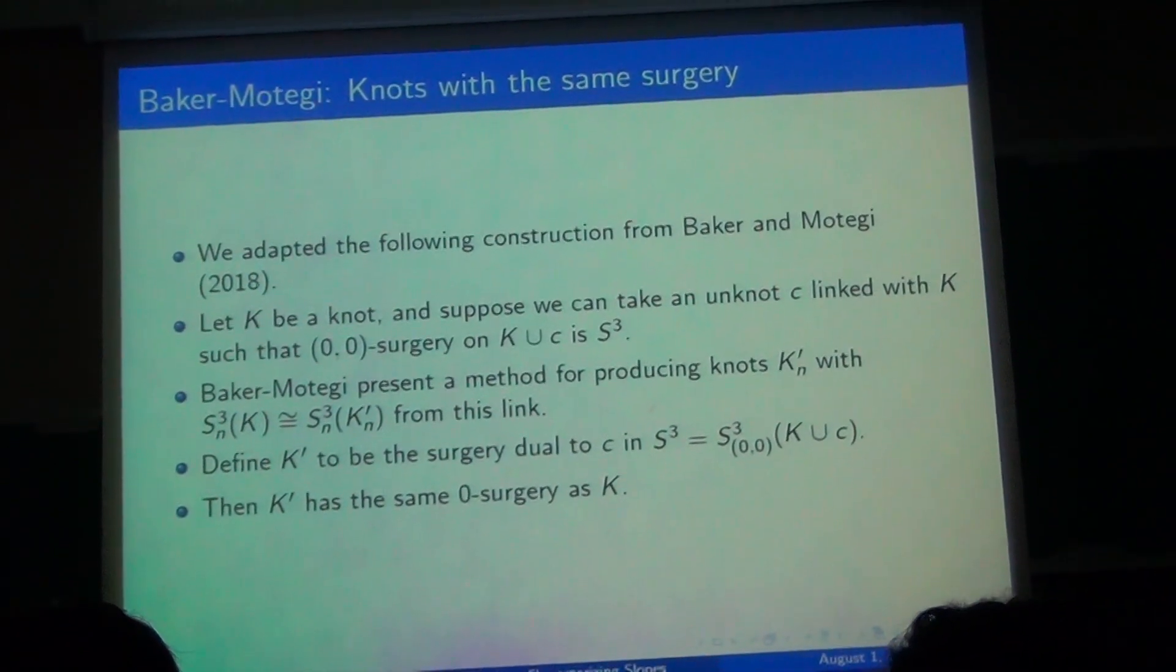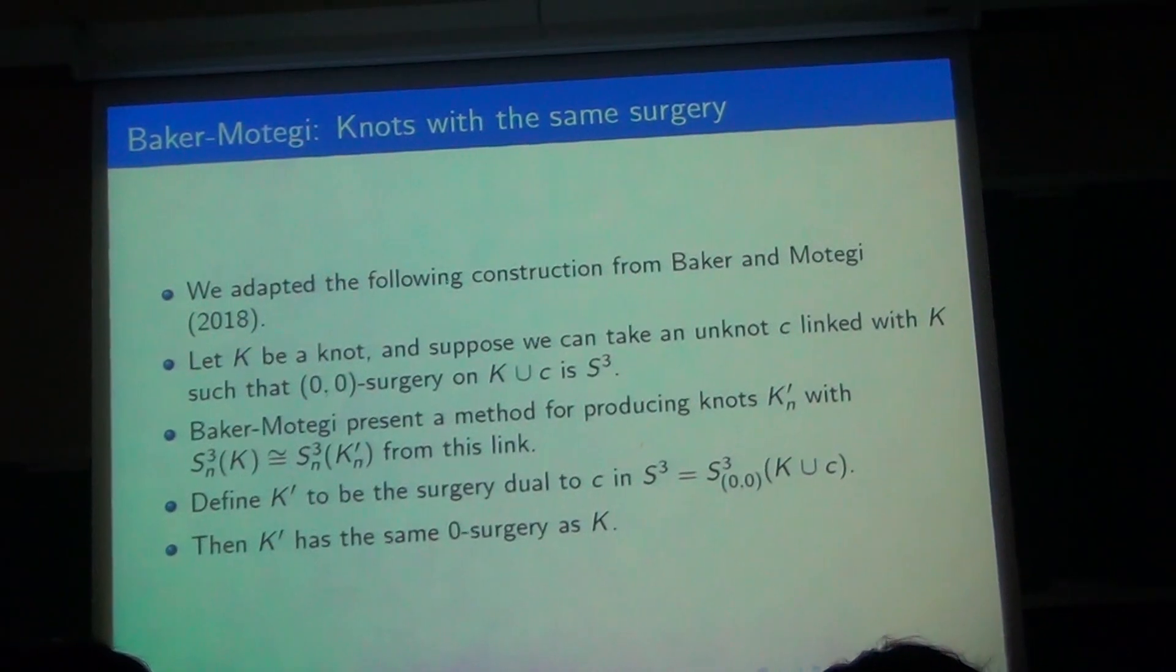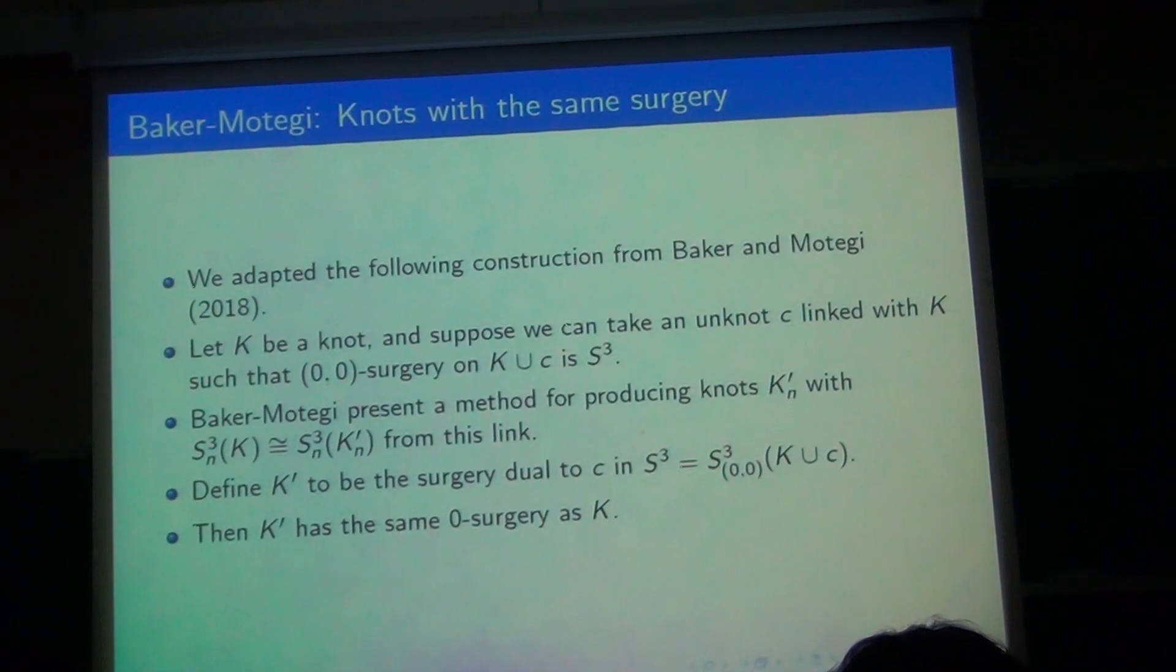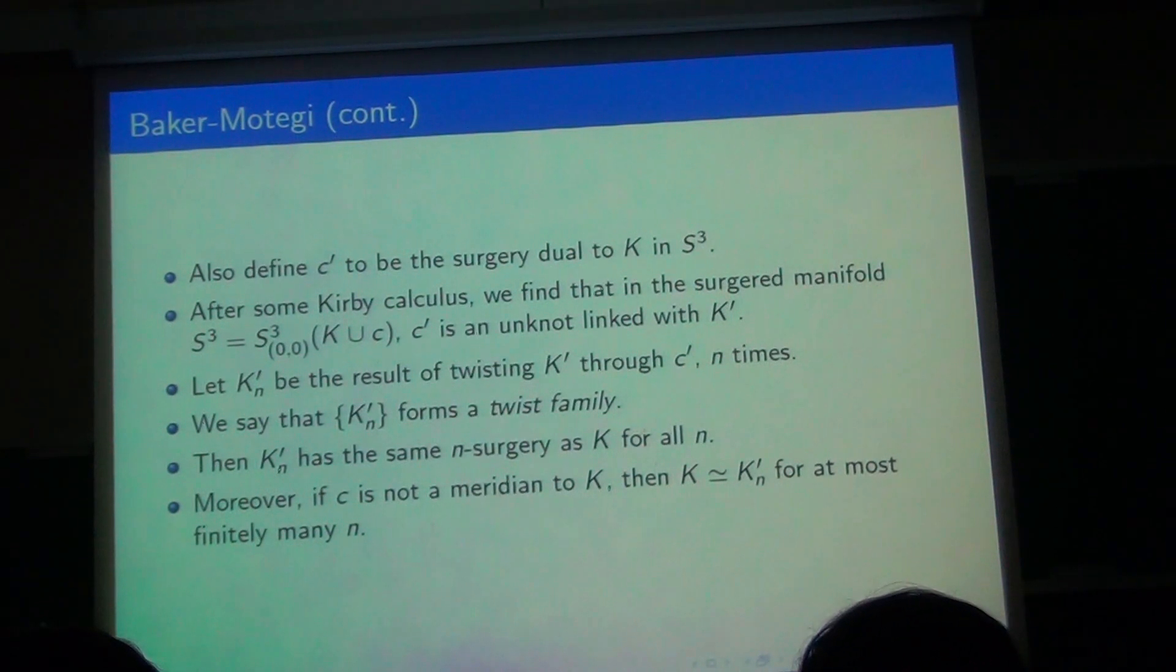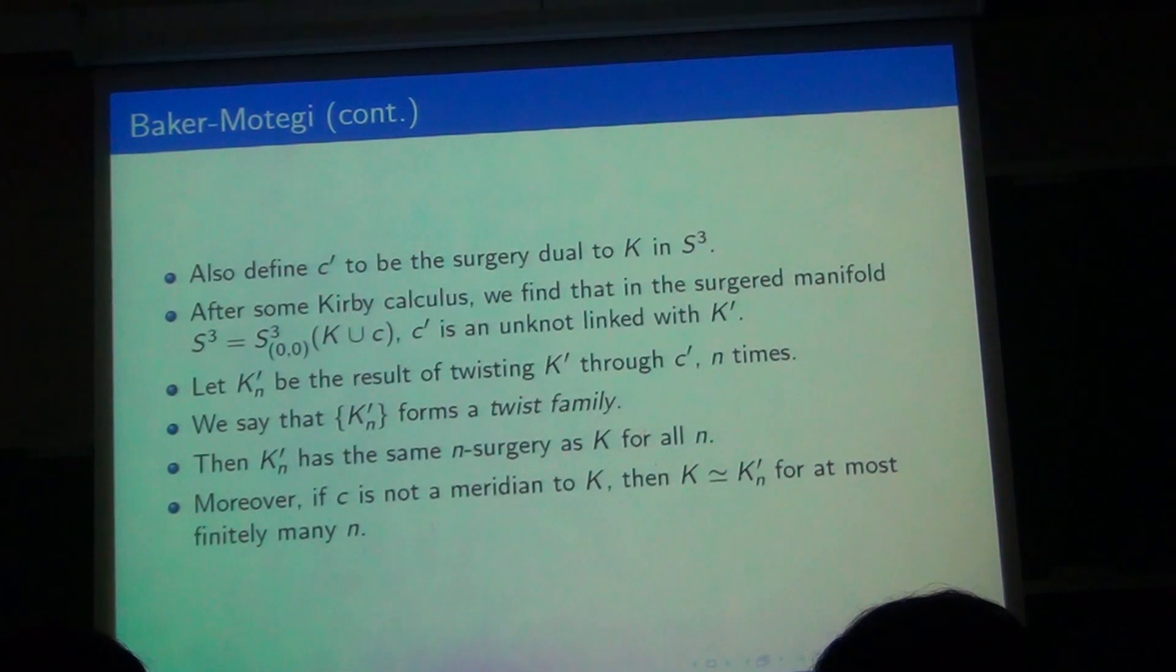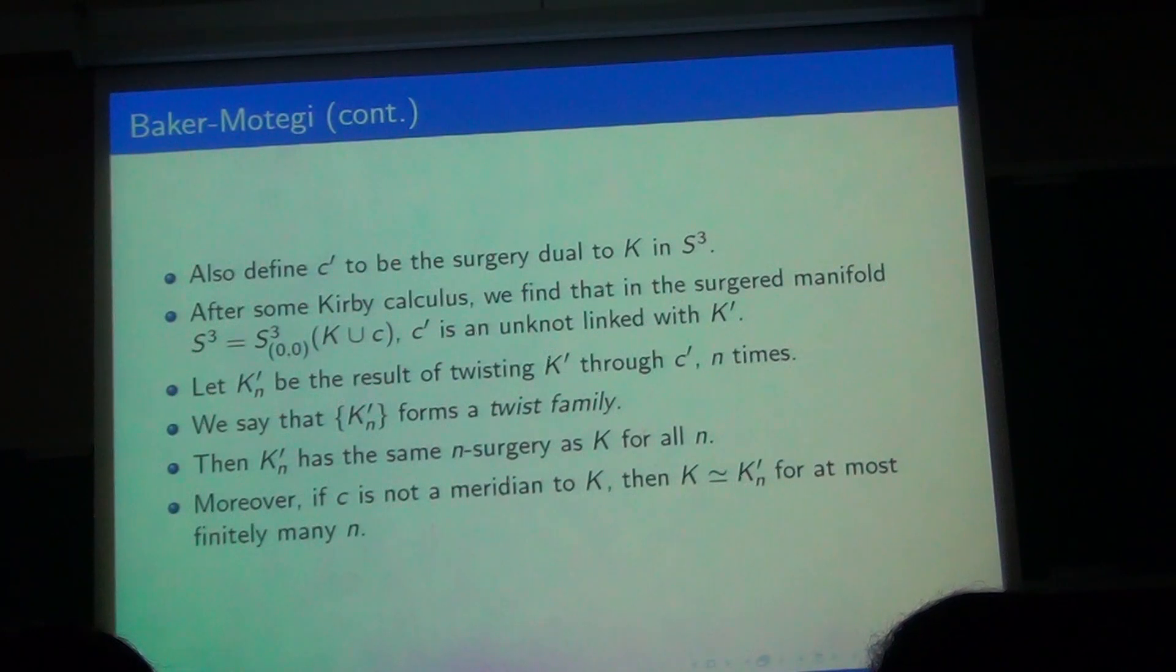So first we define K prime to be the surgery dual of C in S³. Then it turns out K prime has the same zero surgery as K. We also define C prime to be the surgery dual of K. And after some Kirby calculus, we'll see in a second that C prime is actually a knot linked with K prime in S³. So in particular, we can twist K prime through C prime as in a Rolfsen twist. This gives us knots K_n prime for each integer n, and these happen to have the same n surgery as K. And if C is not isotopic to K, then we can actually conclude that at most finitely many of these knots are the same as K, so that for all but finitely many integers, we get a knot different from K with the same surgery.